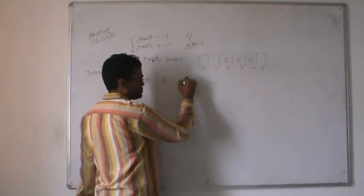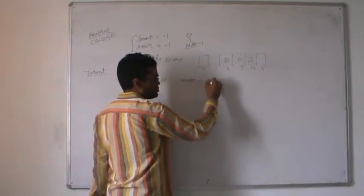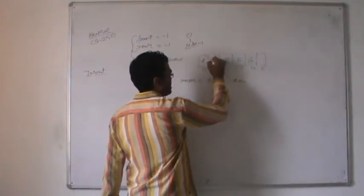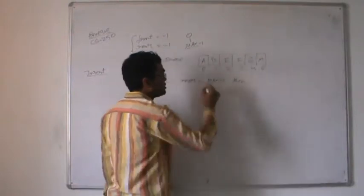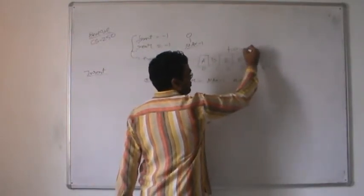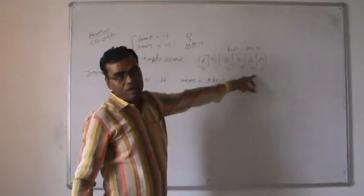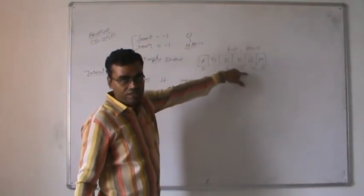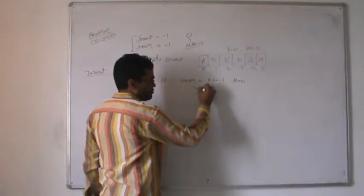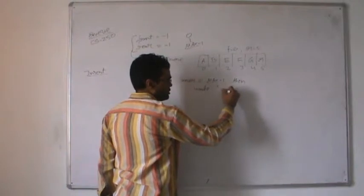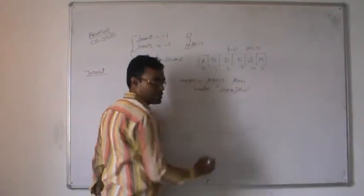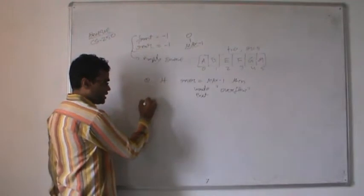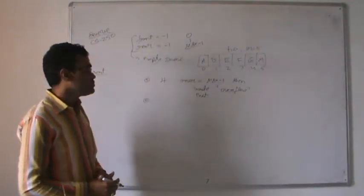When the first element is inserted into the queue at position zero, the value of front becomes zero and the value of rear becomes zero - both are set to zero. As we keep on inserting values, the value of rear keeps on increasing. If I insert another value C, the value of rear becomes one. If I keep inserting values, the rear becomes three. The front is fixed while rear increases with each insertion.